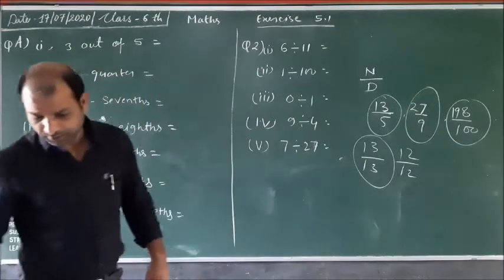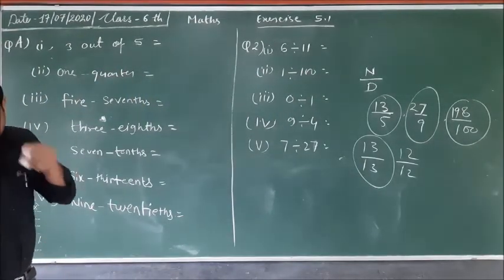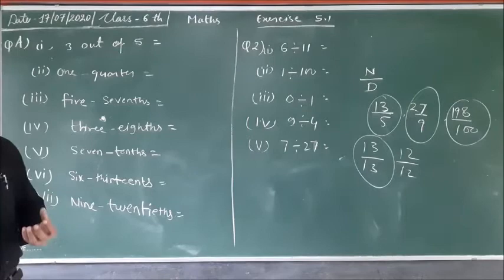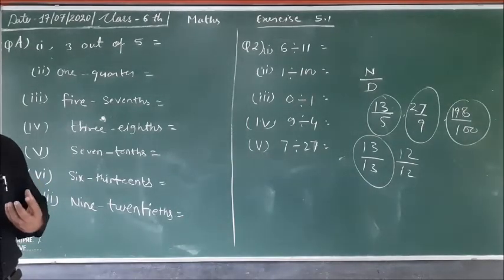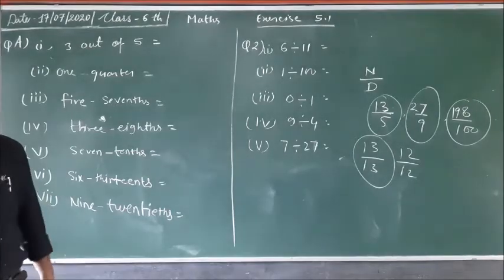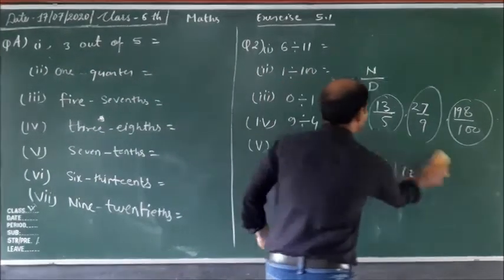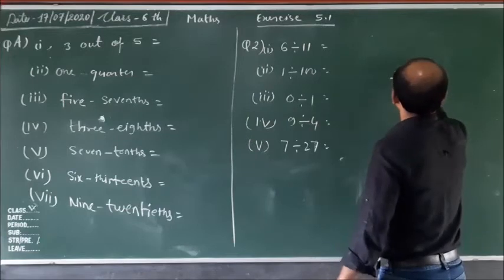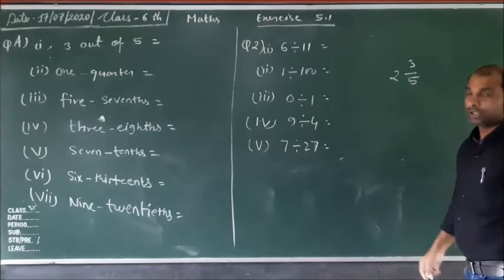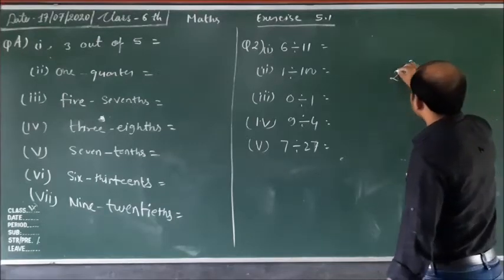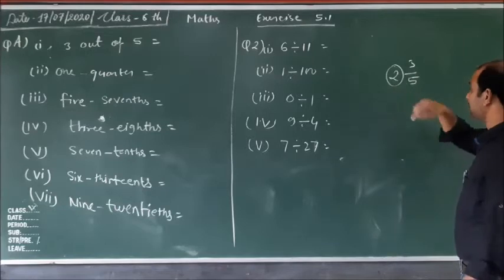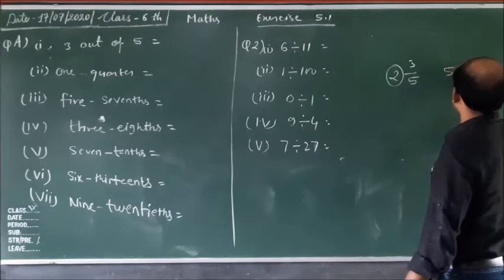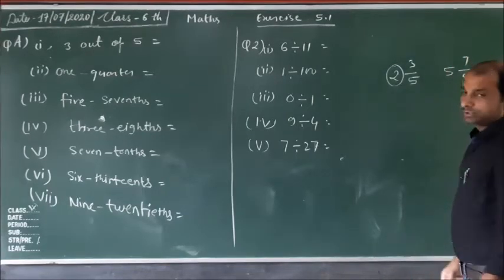Now, the mixed fraction. A whole number and a proper fraction written together, understood to be added to each other, are called a mixed fraction. For example: 2 whole 3 by 5 — this is a mixed fraction because it has a whole number. Also, 5 whole 7 upon 9 — this is a mixed fraction.